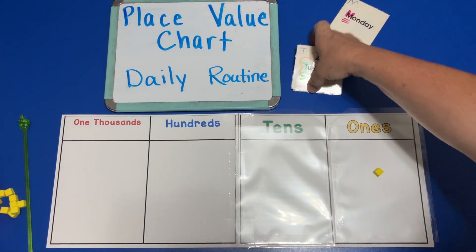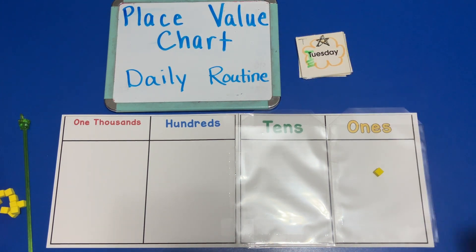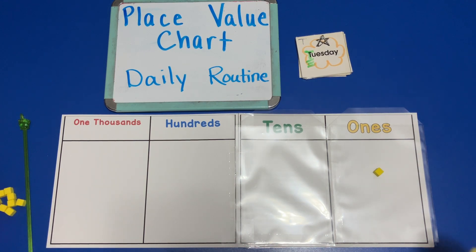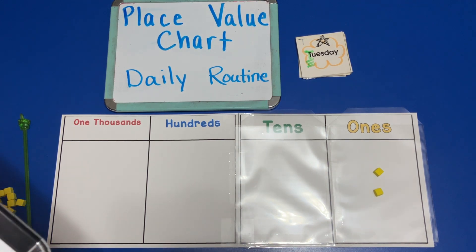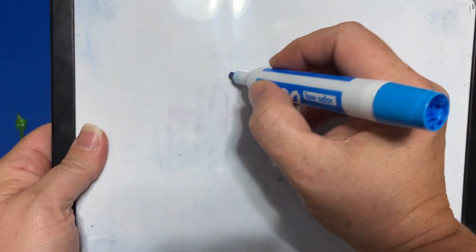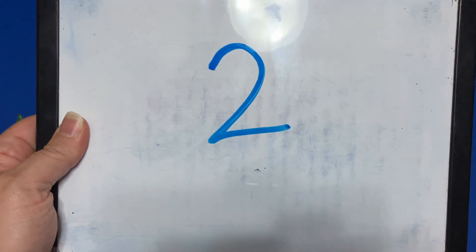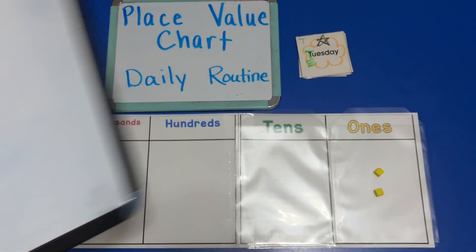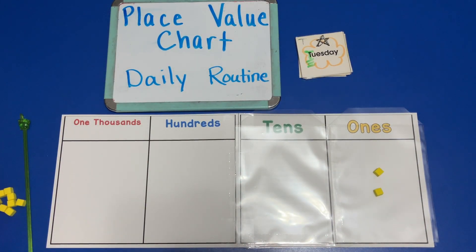Then on Tuesday we would add another unit to the place value chart and we would say that now we have two ones on our place value chart. So we would change this and say now we have two on our place value chart. That's all we would do on Tuesday.